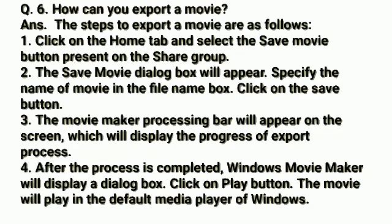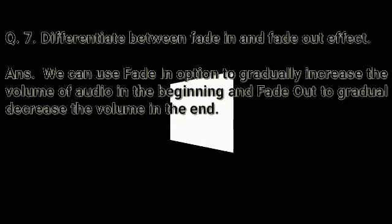The sixth question is: how can you export a movie? Answer: the steps to export a movie are as follows. First, click on the Home tab and select the Save Movie button present on the Share group. Second, the Save Movie dialog box will appear; specify the name of the movie in the File Name box and click the Save button. Third, the Movie Maker processing bar will appear on the screen, which will display the progress of the export process. Fourth, after the process is completed, Windows Movie Maker will display a dialog box; click on the Play button and the movie will play in the default media player of Windows.